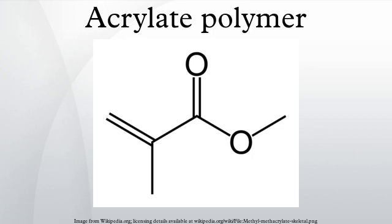Acrylate monomers used to form acrylate polymers are based on the structure of acrylic acid, which consists of a vinyl group and a carboxylic acid terminus. Other typical acrylate monomers are derivatives of acrylic acid, such as methyl methacrylate, in which one vinyl hydrogen and the carboxylic acid hydrogen are both replaced by methyl groups, and acrylonitrile, in which the carboxylic acid group is replaced by the related nitrile group.